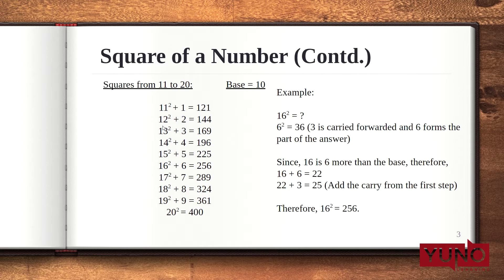Similarly, while calculating the square of 12, the square of 2 is 4. That forms the ones place of our answer. Now, 12 plus 2 is 14. So, 144 is the square of 12.